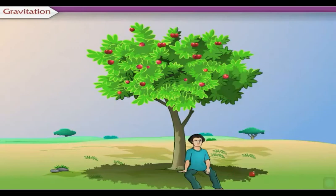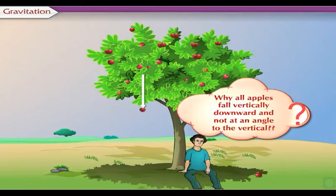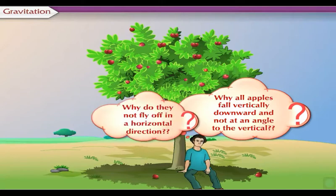It is said that Newton discovered the force by seeing an apple fall from a tree on the ground. He wondered why all apples fall vertically downward and not at an angle to the vertical. Why do they not fly off in a horizontal direction?